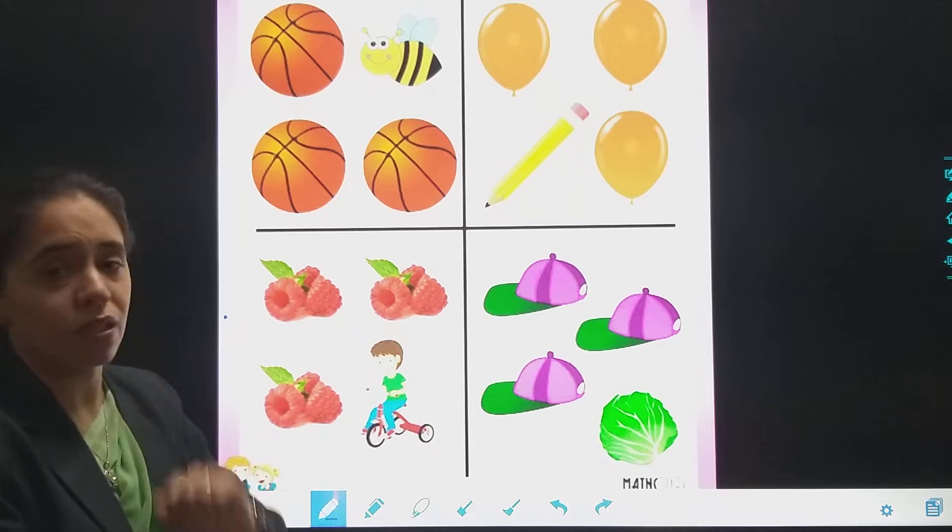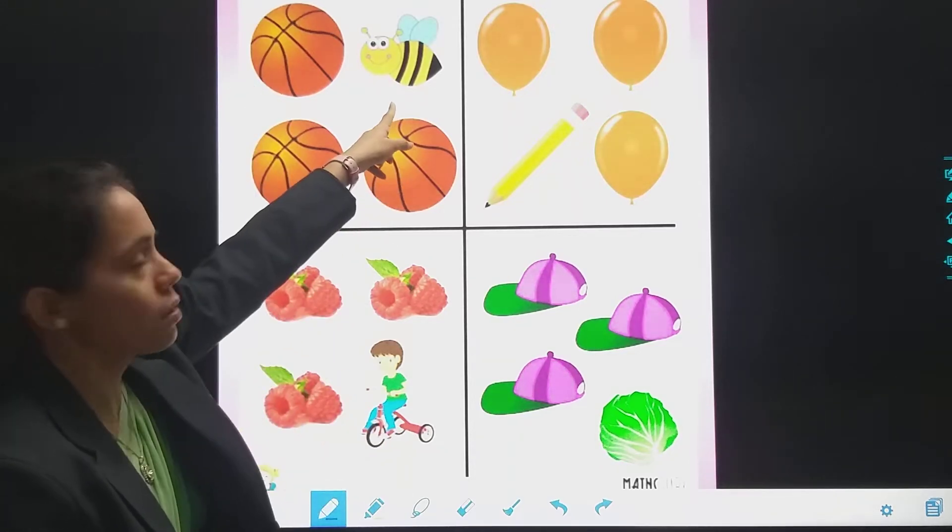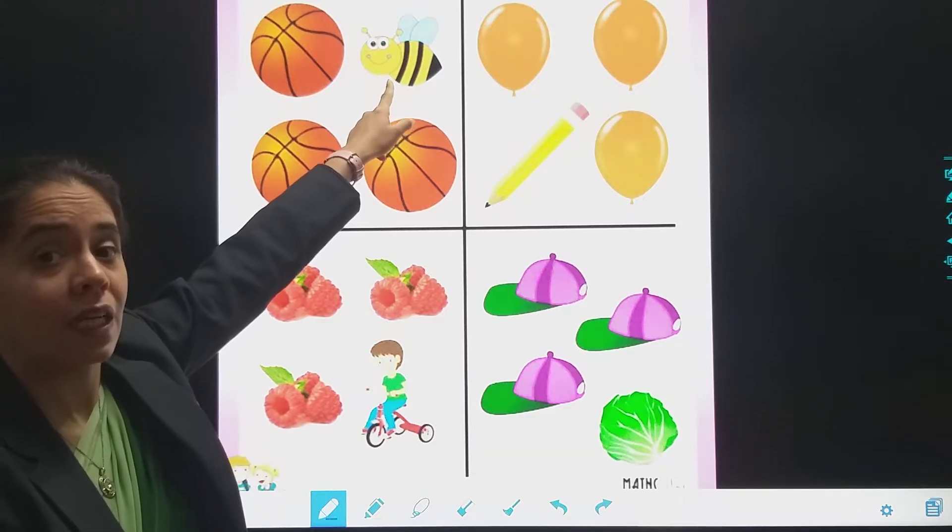See, yaha pe basketballs hai. Yes? One, two, three. Three basketballs hai. This is not a basketball. This is honeybee.